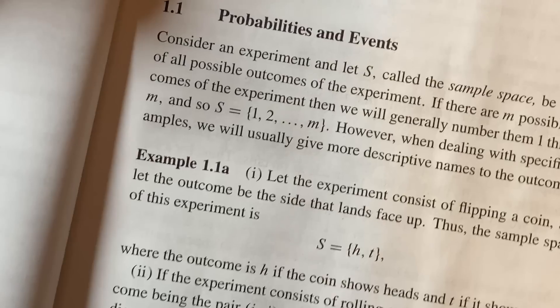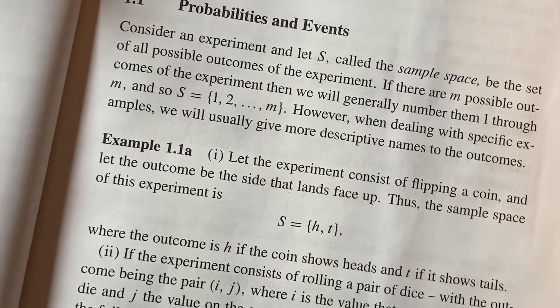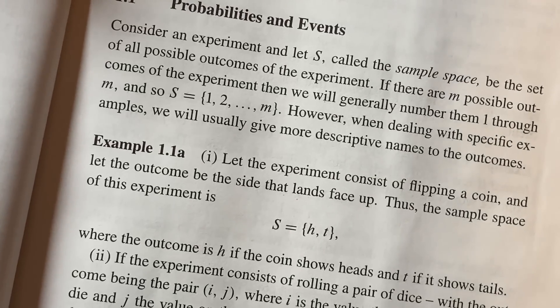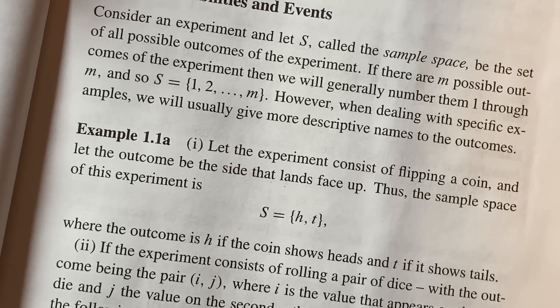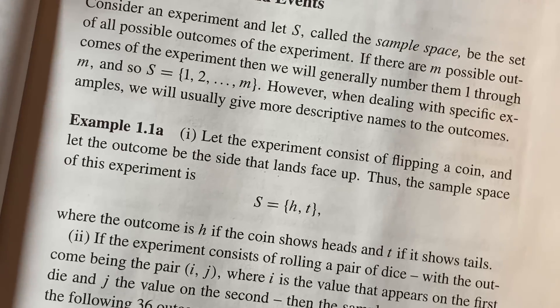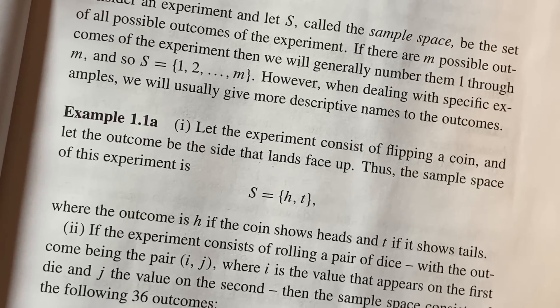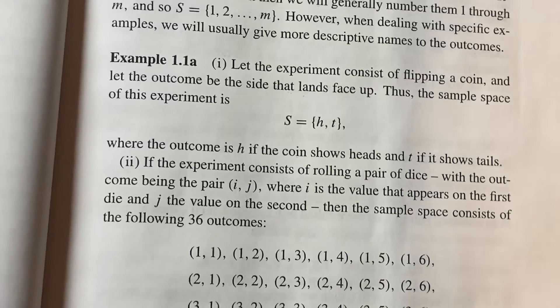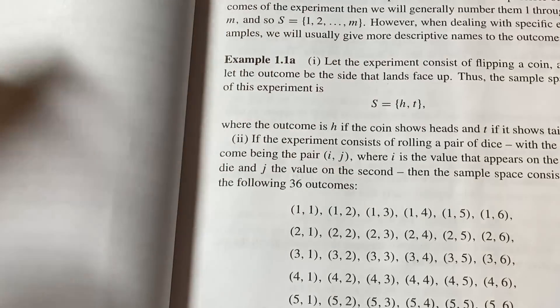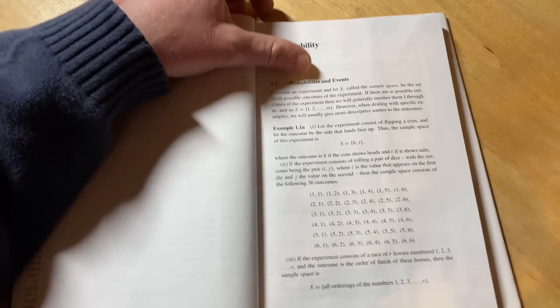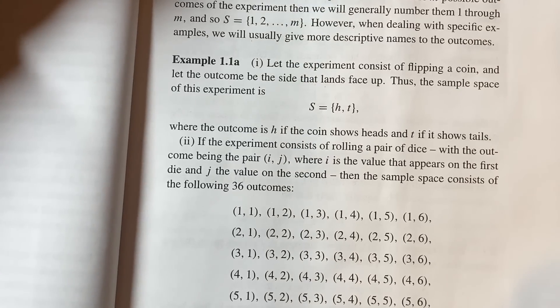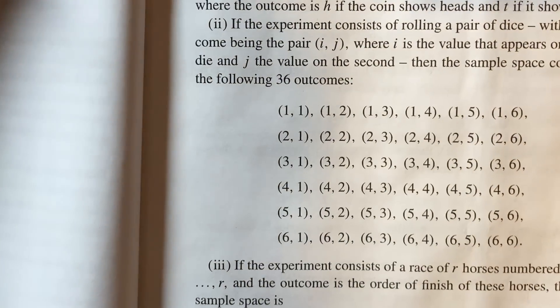He begins: 'Consider an experiment and let S, called the sample space, be the set of all possible outcomes. If there are m possible outcomes, we number them 1 through m.' He then gives very easy examples typical of an introductory statistics course, such as a simple coin toss and rolling a pair of dice.